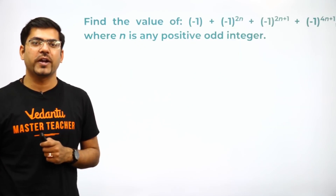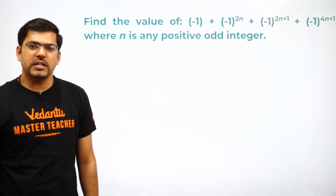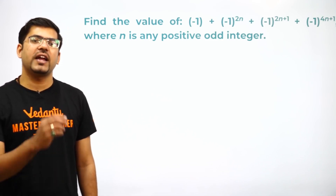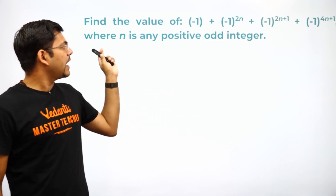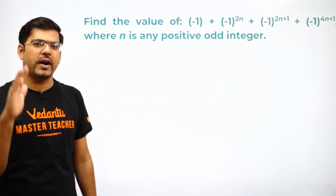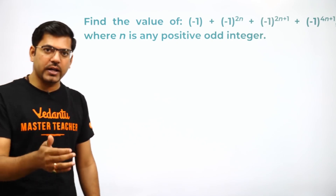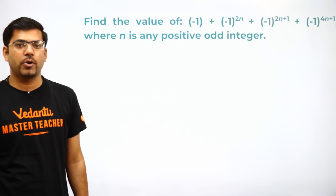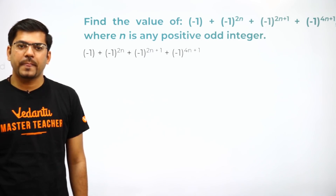Next question: Find the value of (-1) + (-1)^(2n) + (-1)^(2n+1) + (-1)^(4n+1), where n is any positive odd integer. The last condition 'n is any positive odd integer' is just to confuse you — it's not required. This could be a 2-marker or 1-marker question; a 3-marker would be too much for this. But it is an important question, so let's solve it.